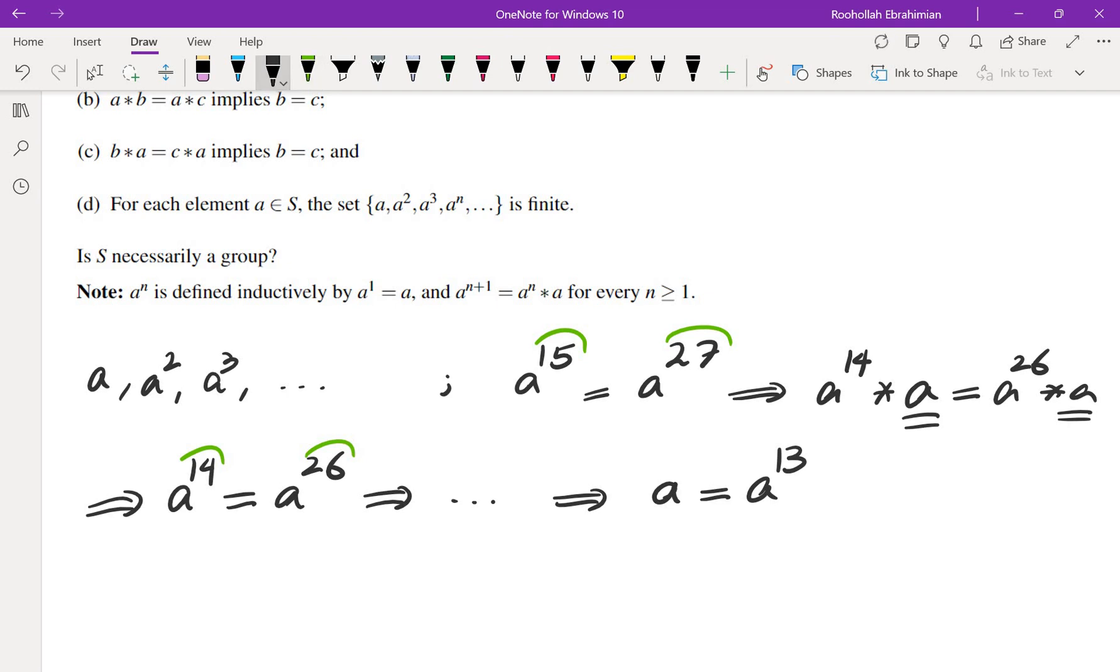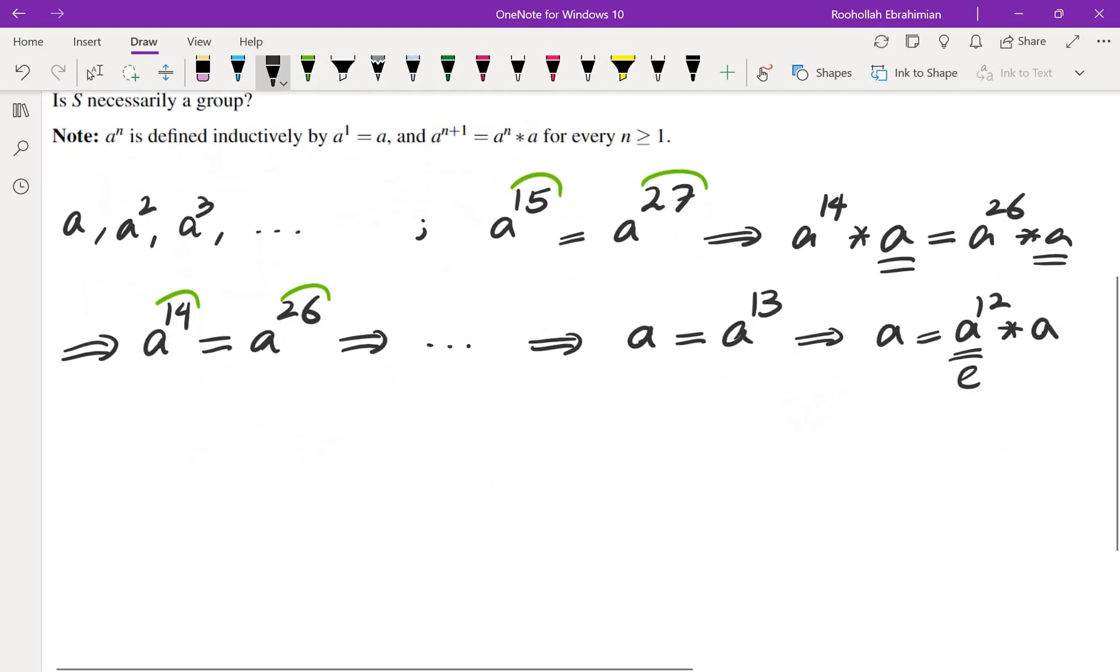Which is why you end up with a equals a to the 13th, which means you have a equals a to the 12th star a. So this is a candidate for the identity of the group. Of course, this is not necessarily the identity at this point because it only satisfies a equals e, if I call this one e, star a, for that particular element a.